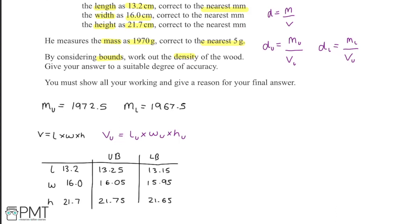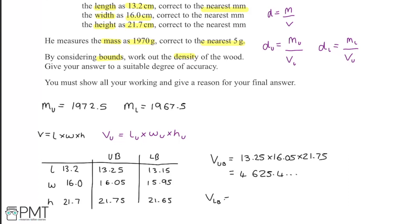With bounds for length, width, and height, we can calculate the volume bounds. The upper bound for volume is 13.25 × 16.05 × 21.75 ≈ 4625.4 cm³ (to one decimal place). The lower bound for volume is the lower bounds multiplied together, giving approximately 4540.9 cm³.